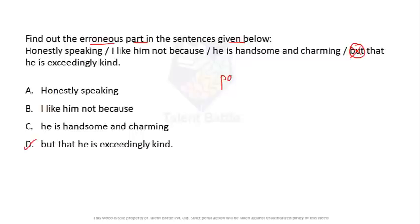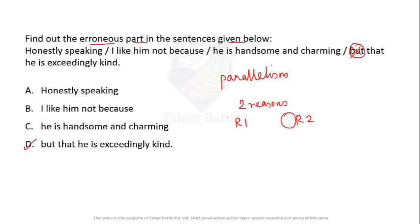This is known as parallelism. When two reasons are being given, both reason one and reason two must have the same format — the tenses and words associated with them must match throughout.